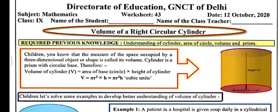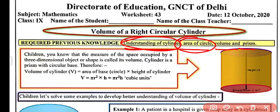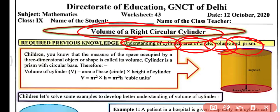The required previous knowledge is understanding of cylinder, area of circle, volume, and prism. Students have to know about the area of a circle, what is volume, and what is a prism — so that students can understand the volume of a right circular cylinder.